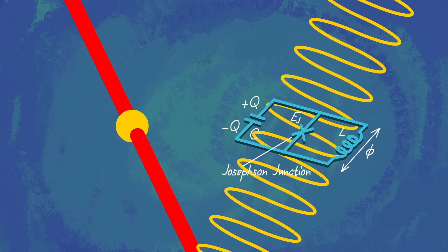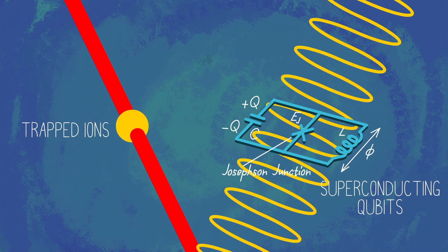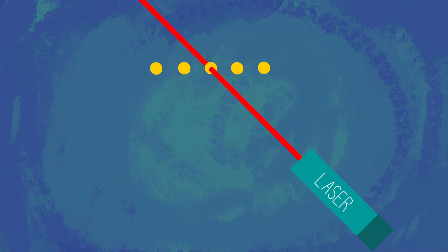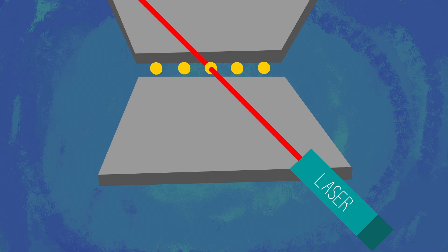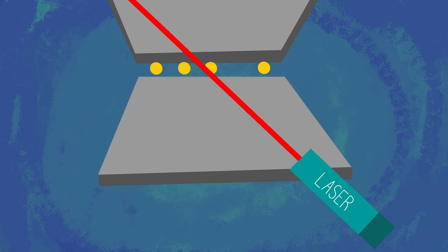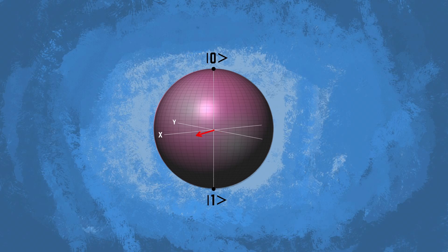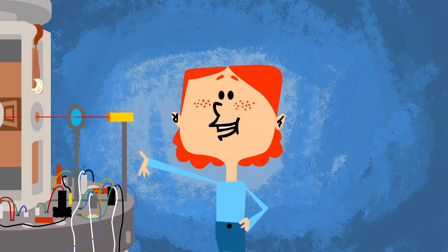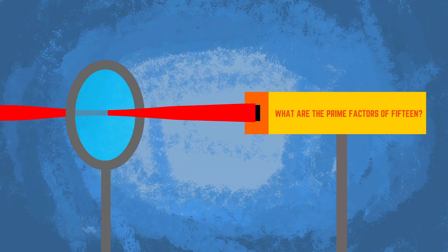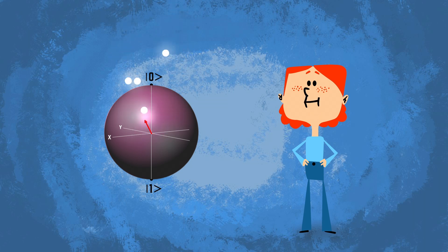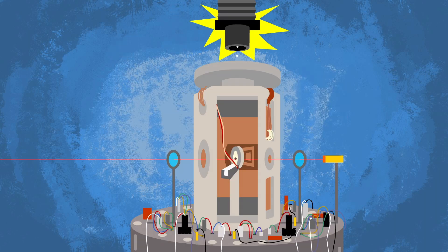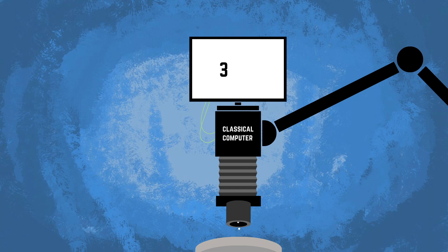For now, there are two leading approaches: trapped ions and superconducting qubits. A trapped ion quantum computer uses ions as its particles and manipulates them with lasers. The ions are housed in a trap made of electrical fields. Inputs from the lasers tell the ions what operation to make by causing the qubit state to rotate on the sphere. To use a simplified example, the lasers could input the question: what are the prime factors of 15? In response, the ions may release photons. The state of the qubit determines whether the ion emits photons and how many photons it emits. An imaging system collects these photons and processes them to reveal the answer, 3 and 5.